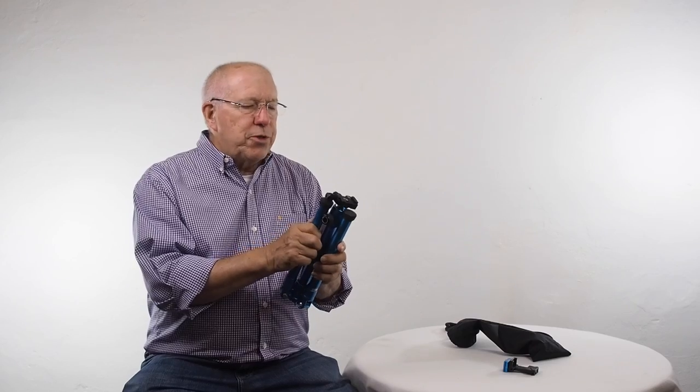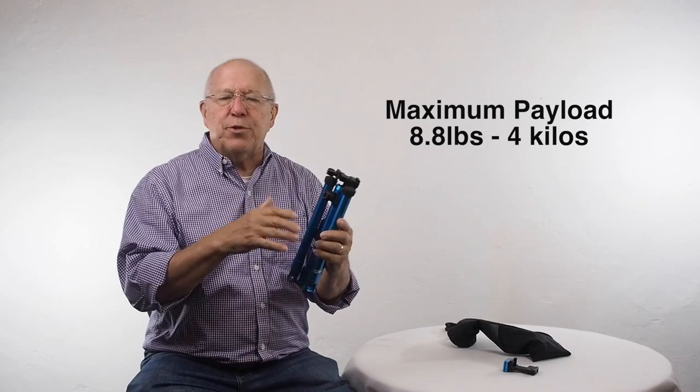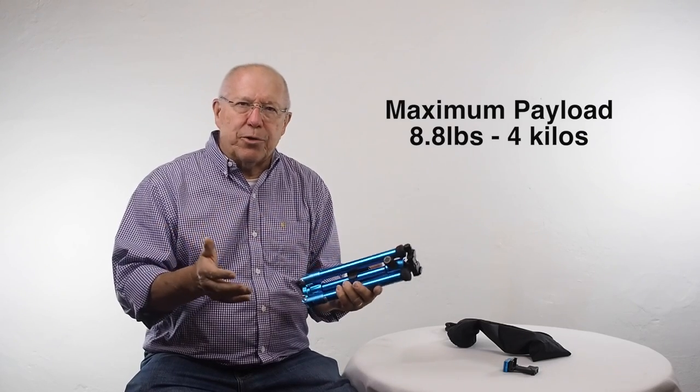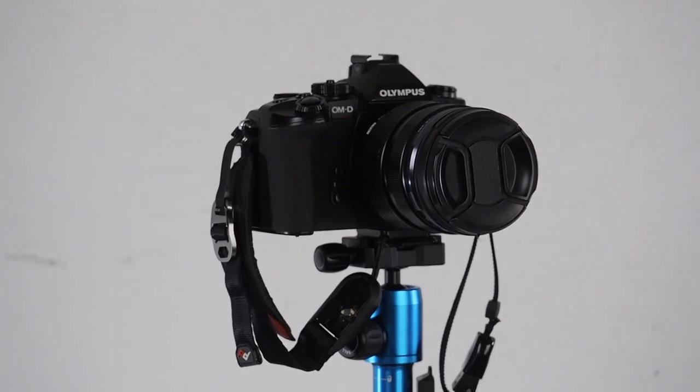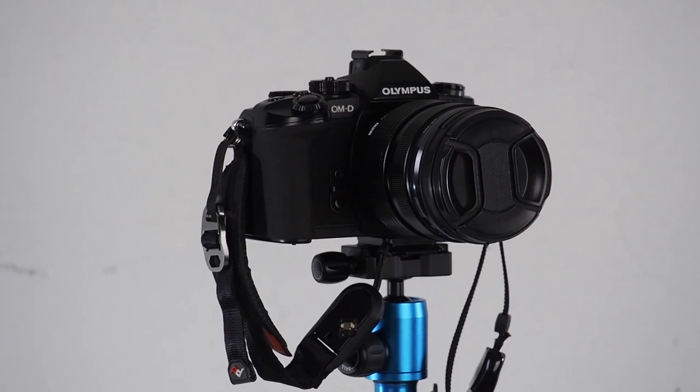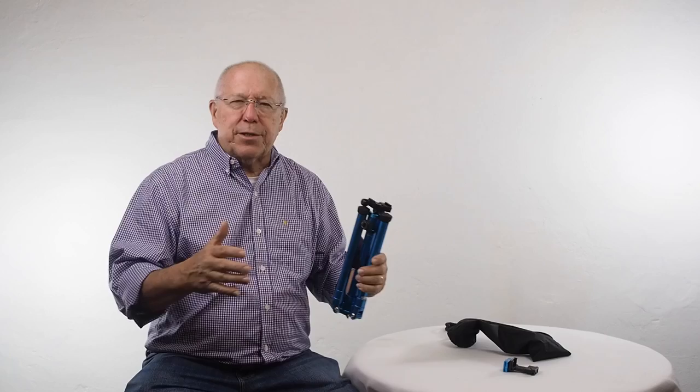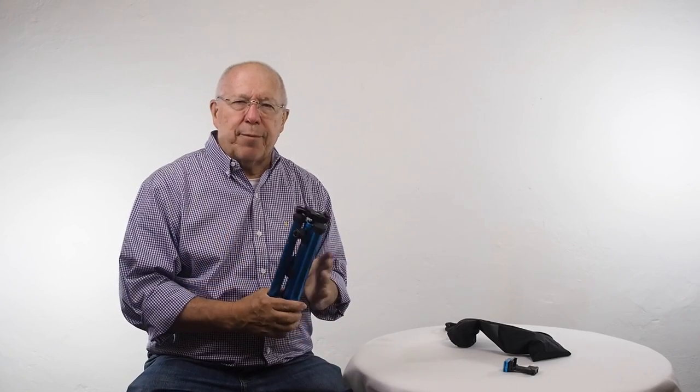It's supposed to hold a payload of up to 8.8 pounds, which is 4 kilos, and that's a fairly hefty camera. I've got, in the picture, my EM-1 on it. And if I have the legs in one of their wider positions, I'm comfortable with the EM-1 on it without my touching the tripod.